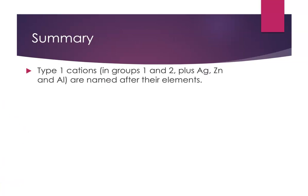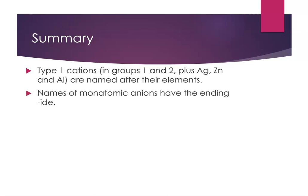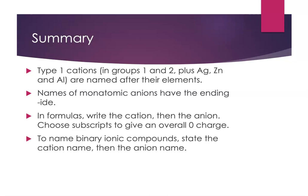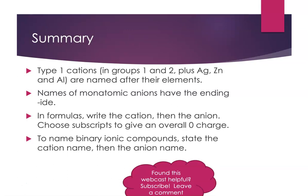To summarize: Type 1 cations are named after their elements — they include groups 1 and 2 plus silver, zinc, and aluminum. Monatomic anions are named by dropping the last letters and changing the ending to -ide. When writing formulas, always write the cation first, then the anion, and choose subscripts so the overall charge is zero. To name binary ionic compounds, give the cation name followed by the anion name. I hope you found this helpful — please consider subscribing, leave a comment, and keep learning chemistry!